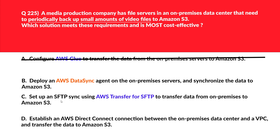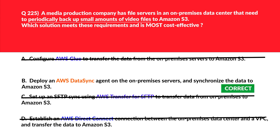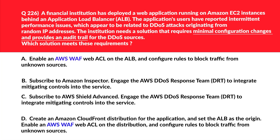Option C says set up an SFTP sync using AWS Transfer for SFTP to transfer data from on-premises to Amazon S3. AWS Transfer for SFTP is suited for secure file transfer rather than automated periodic backups — wrong answer. Option D says establish an AWS Direct Connect connection. Direct Connect is a dedicated network connection and may be overkill for a small periodic backup, leading to higher costs. We'll reject this and lock option B as the correct answer.